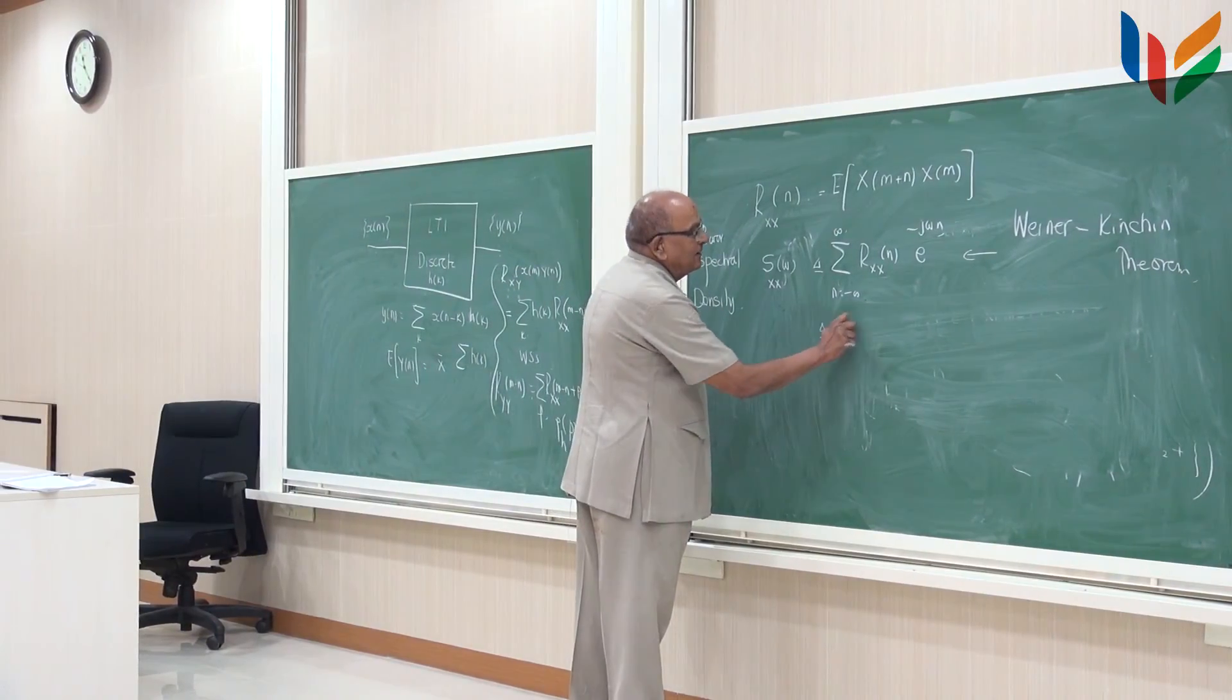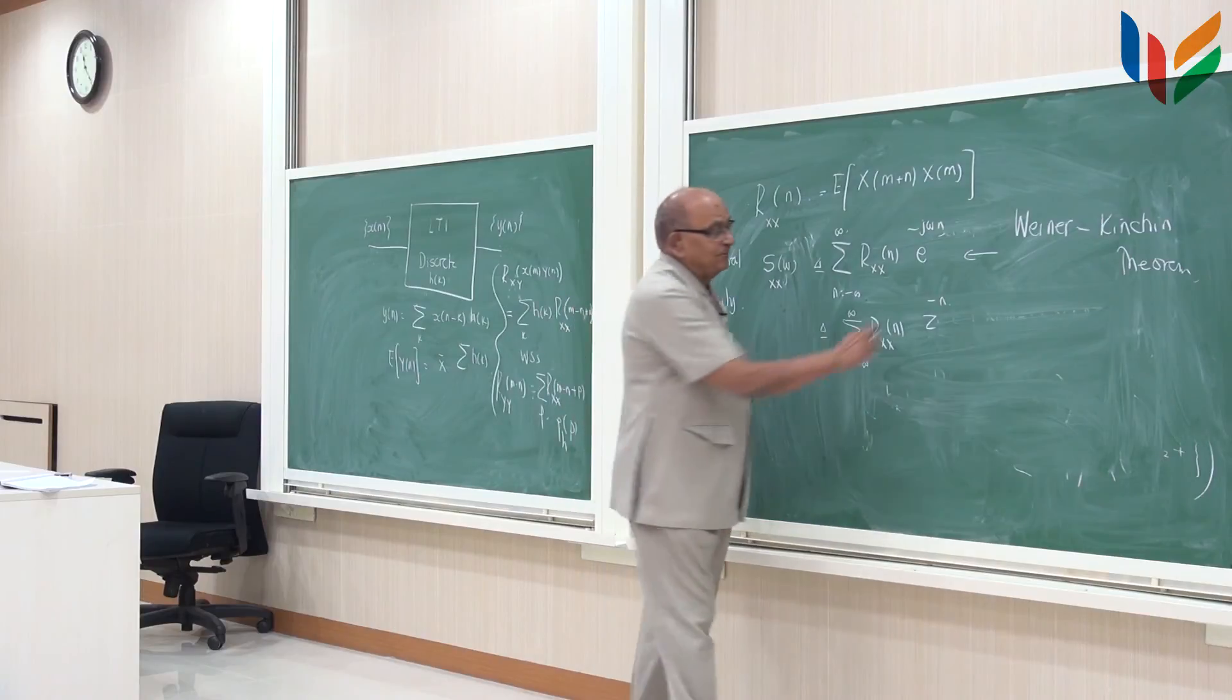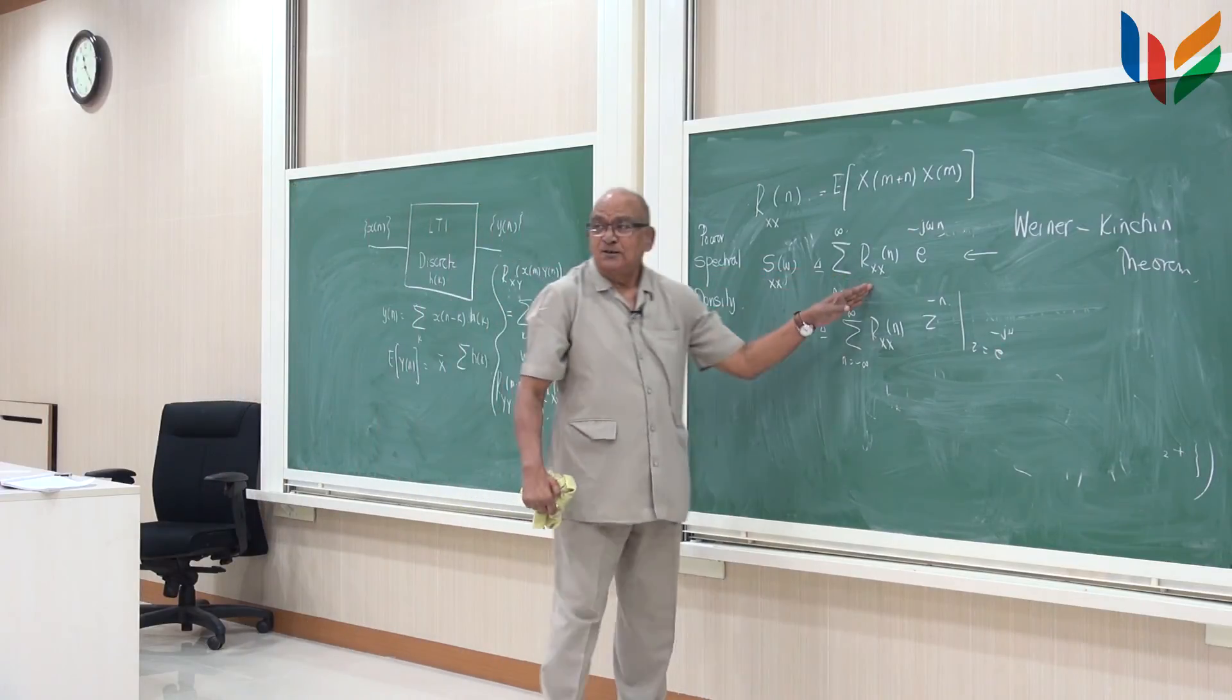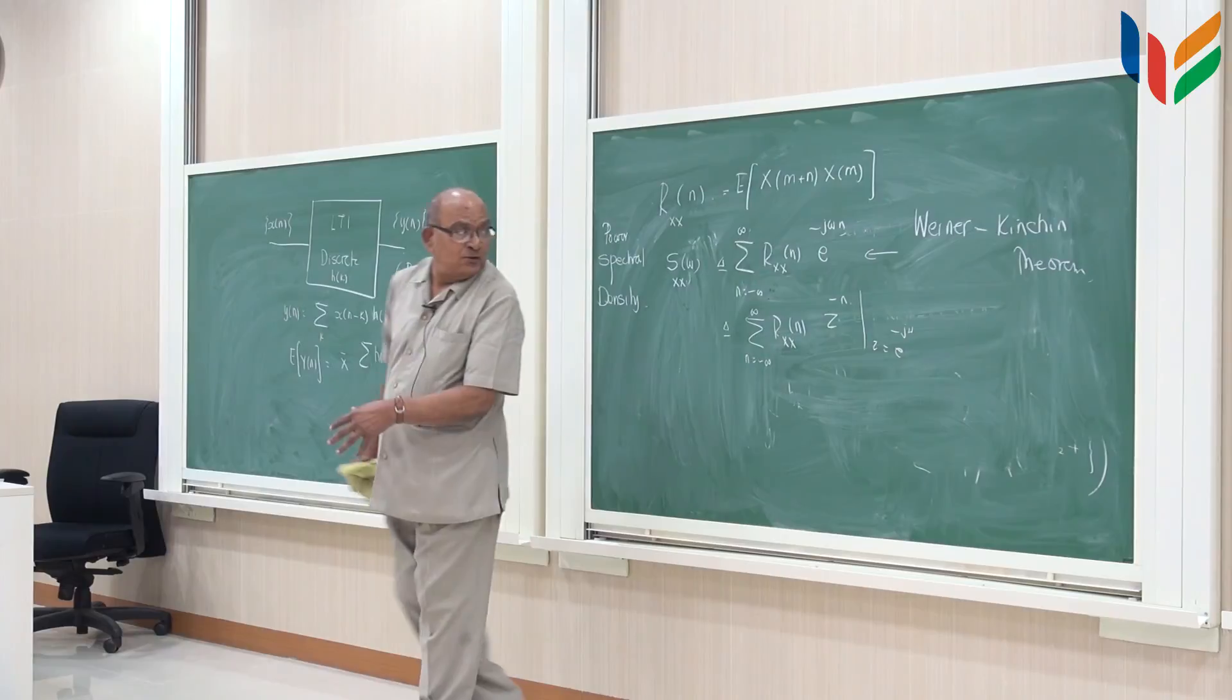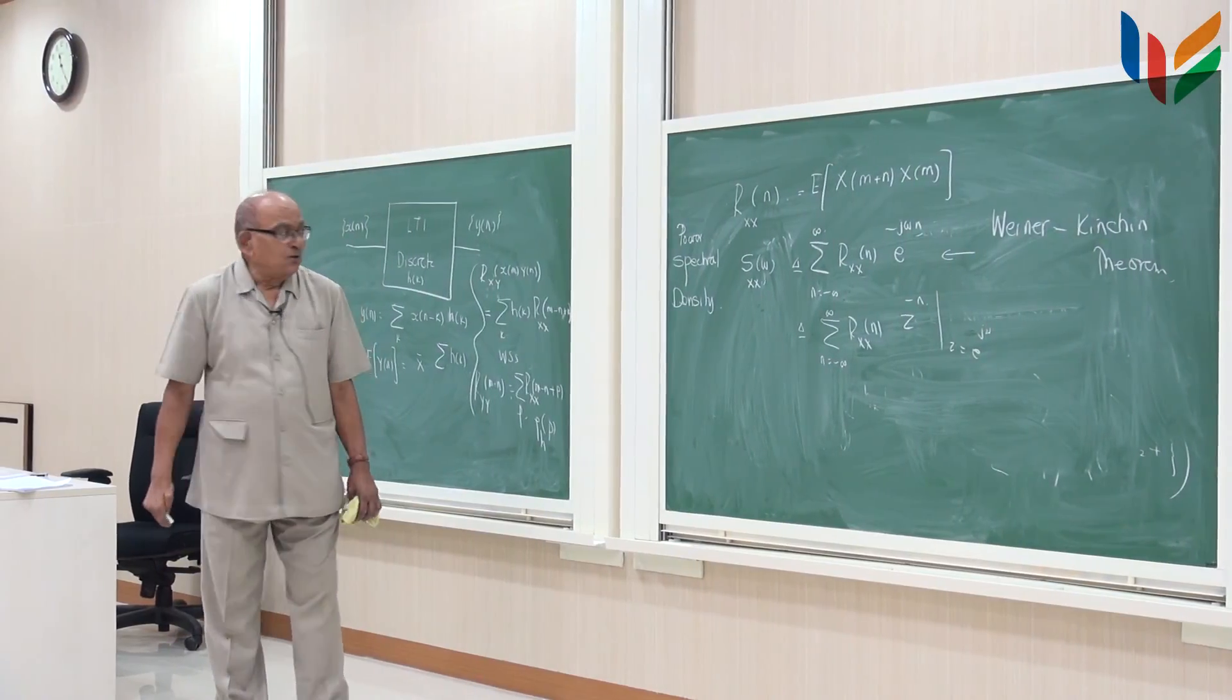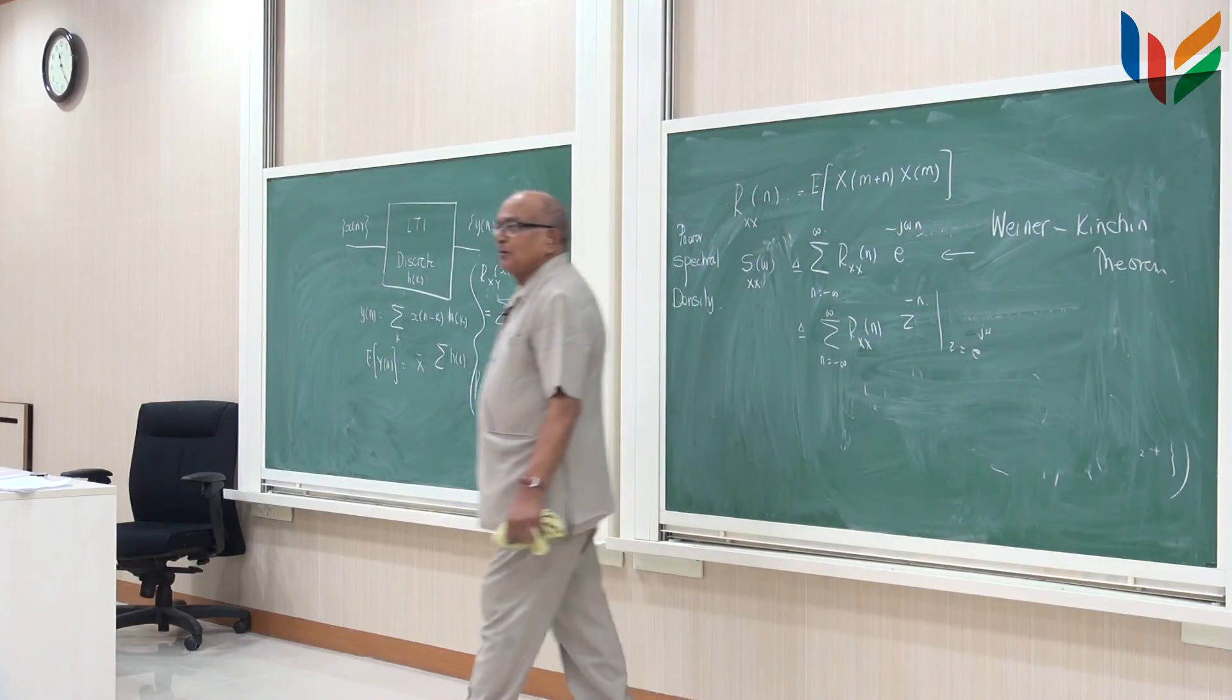If I now write this differently, does it ring the bell? It is nothing but the z transform of these sample values of the correlation function. But this is obtained by evaluating the z value equal to e to the power of j omega, not minus j omega. Because z transform, z minus n. So this is j omega. So what I am saying is the spectral density is obtained by taking the z transform and substituting z equal to e to the power of j omega.